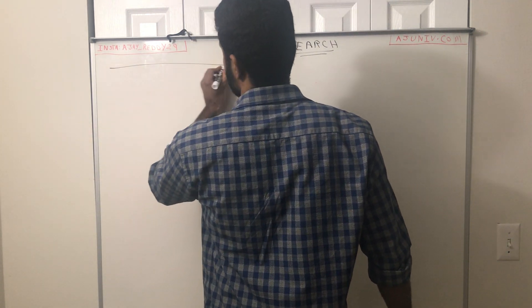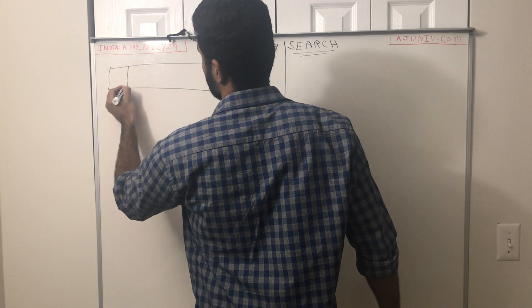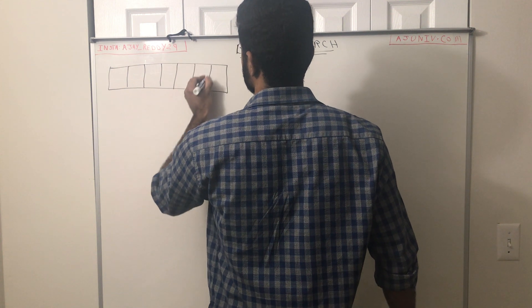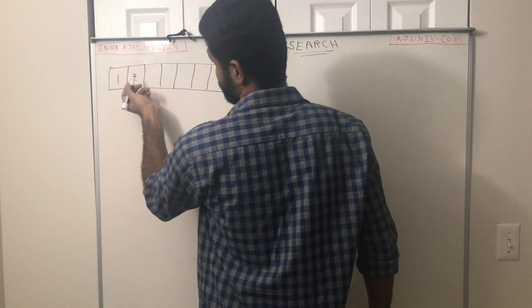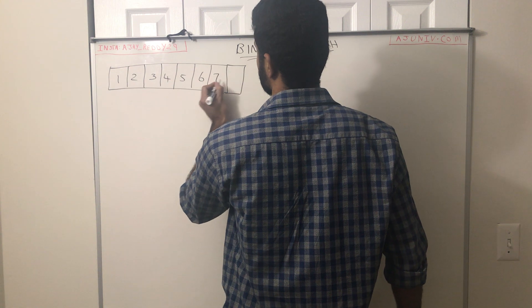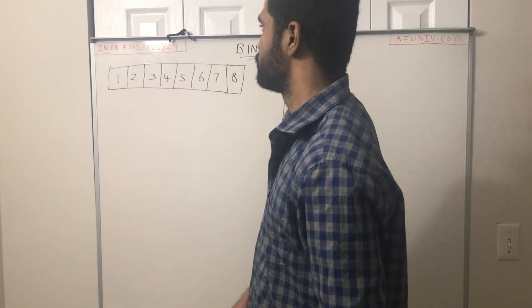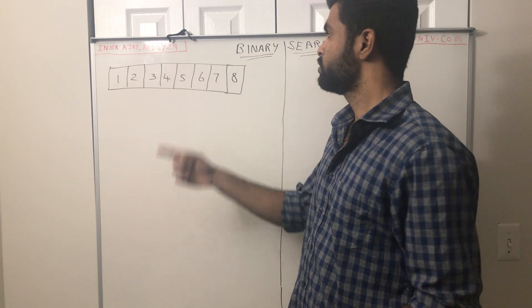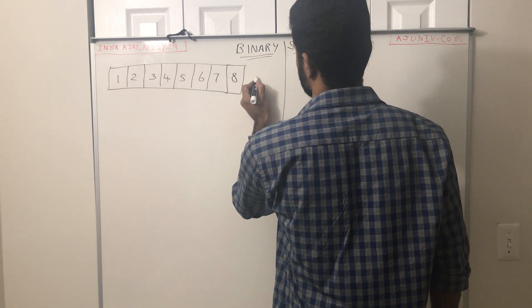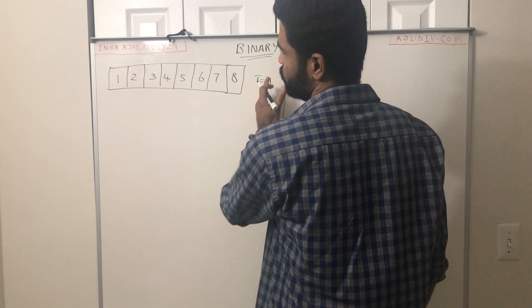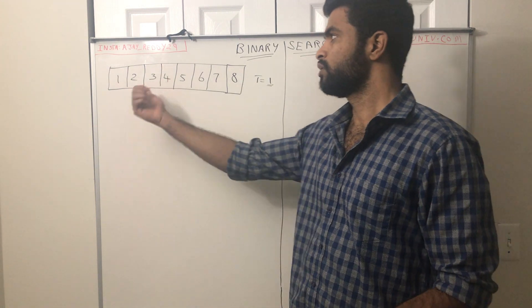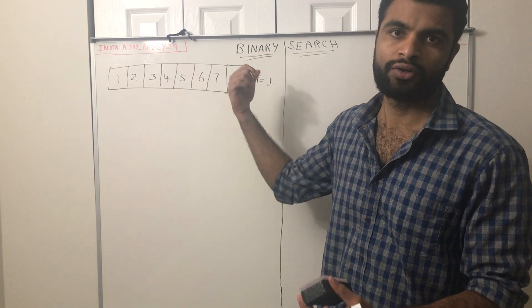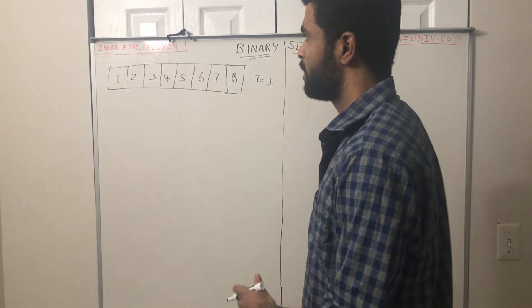First, say I have an array of eight elements which is a sorted array: 1, 2, 3, 4, 5, 6, 7, 8. If I am given a target of 1, I have to check whether 1 is in this array or not. Let's see how we can do that using binary search algorithm.